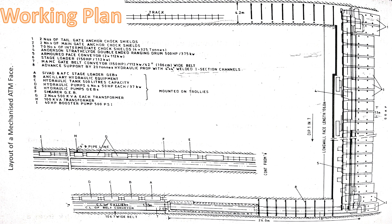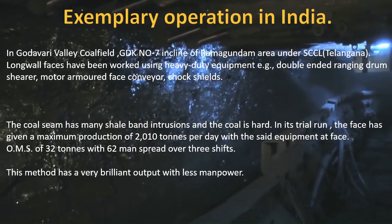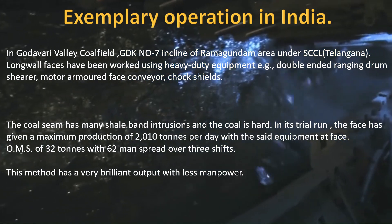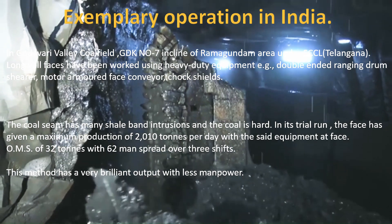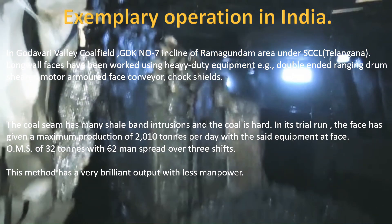Now let's talk about ATM operation in India. In Godavari Valley Coal Field, GDK No. 7 Incline — this is the Singareni Colliery Company Limited. It started working in 1984 in the ATM phase. All the equipments were inducted into ATM, and the production achieved with a lower fatality rate.